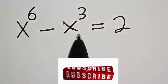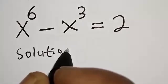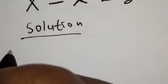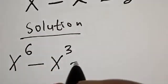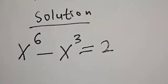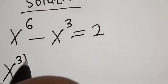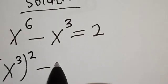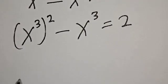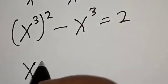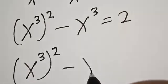Solution: we have the given equation s raised to power 6 minus s raised to power 3 is equal to 2. Then we have s raised to power 3, squared, minus s raised to power 3 is equal to 2.